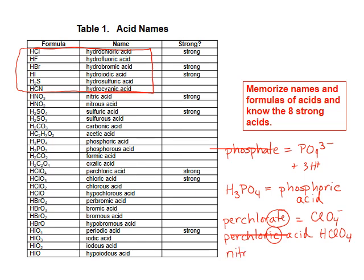Nitrite, on the other hand, the NO2 minus ion, its acid is HNO2, and this is called nitrous acid. Again, the -ite ending became -us.